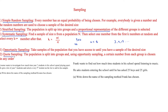Quota sampling is fairly similar, however in this method you split the population into groups and then using opportunity sampling a certain number from each group is chosen in any order. For example, splitting into boys and girls — as boys walk in they are included until you reach the maximum number needed for boys, then you do the same for girls.